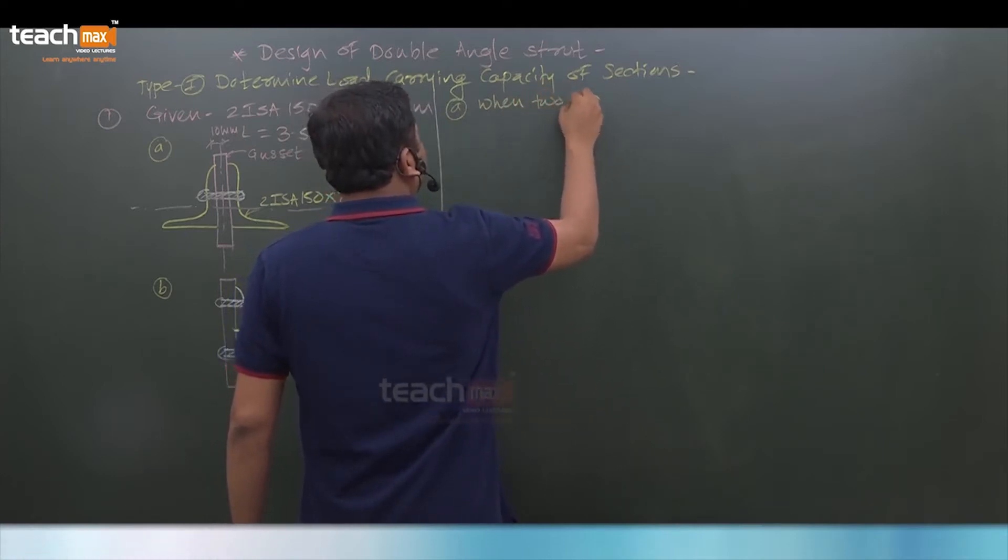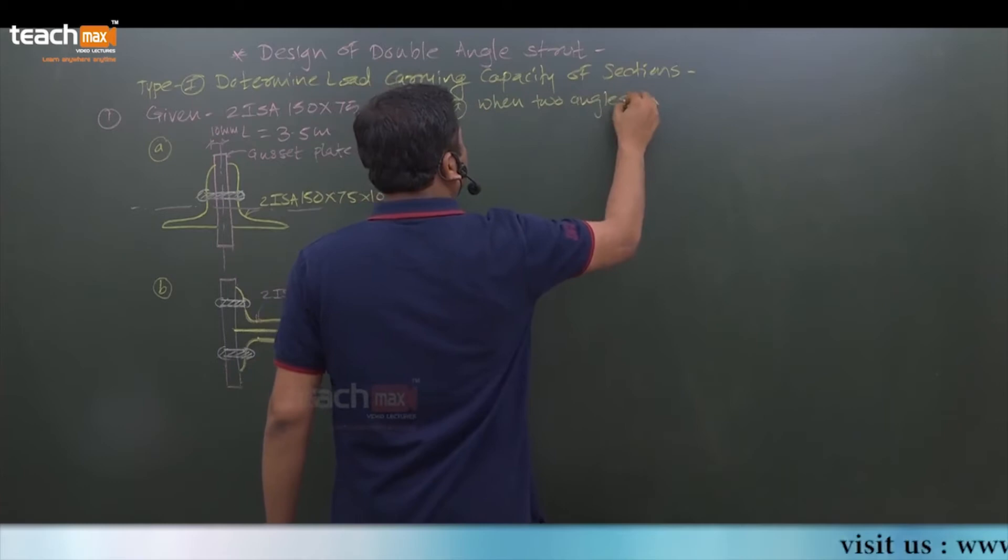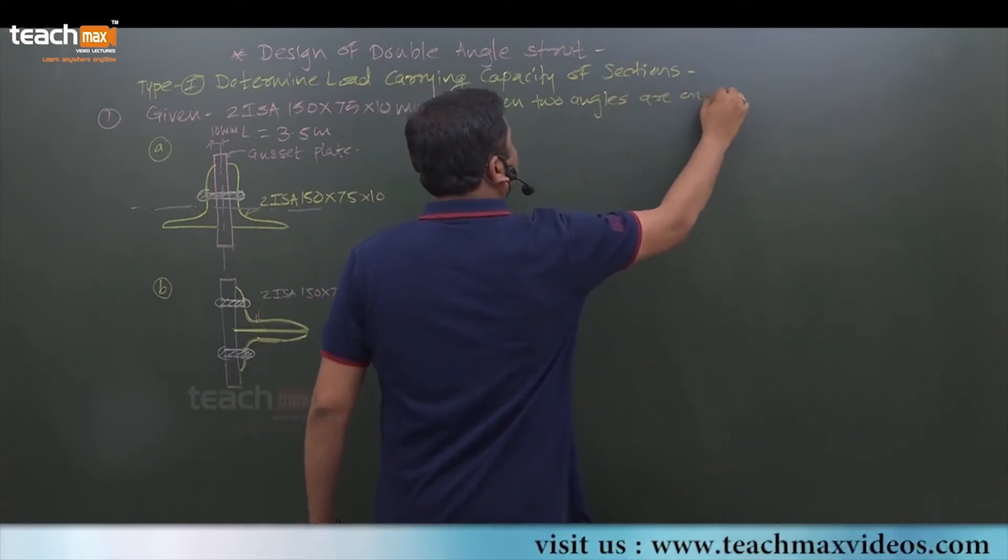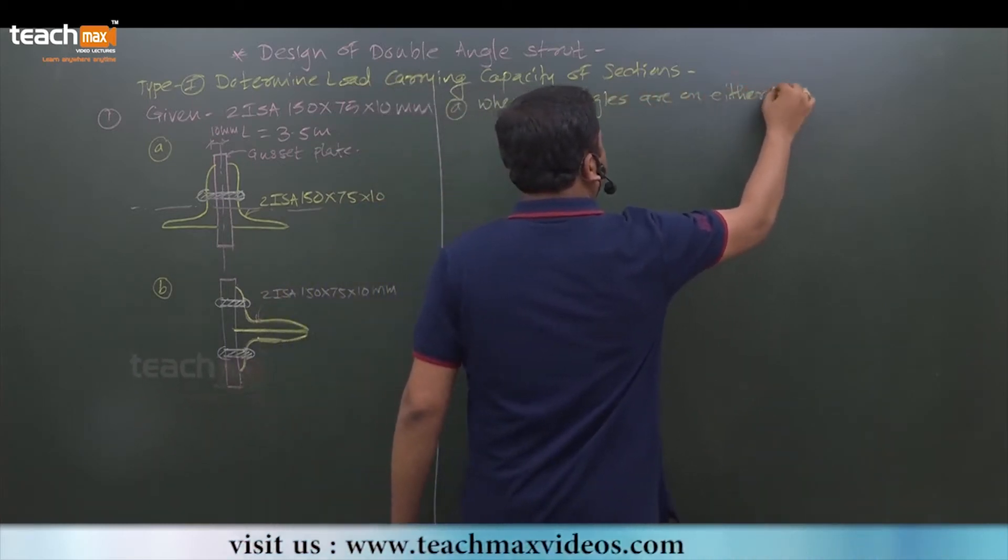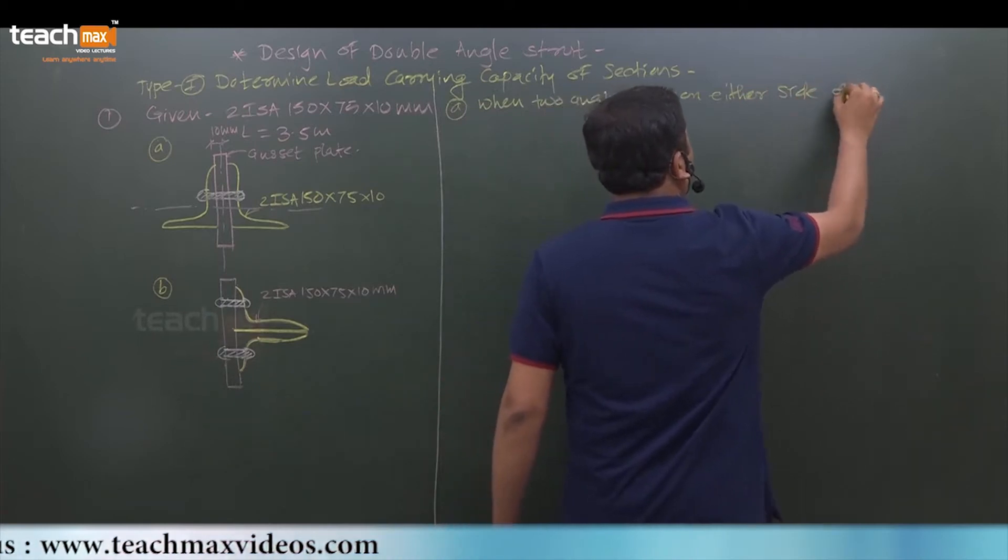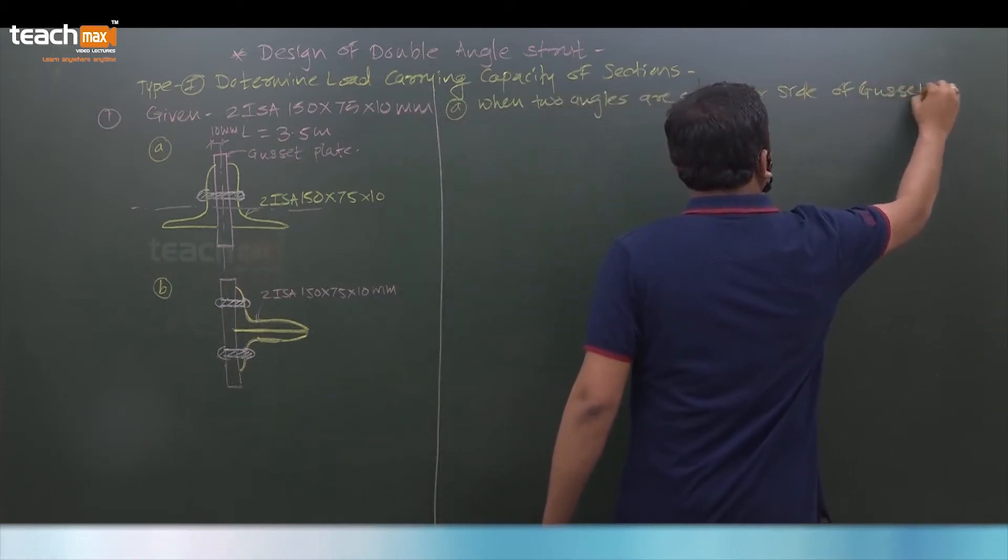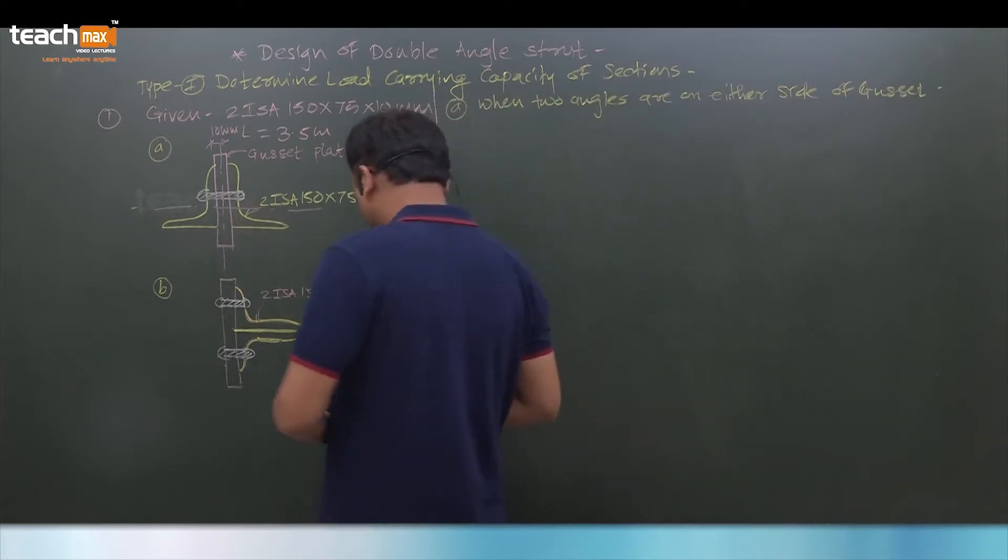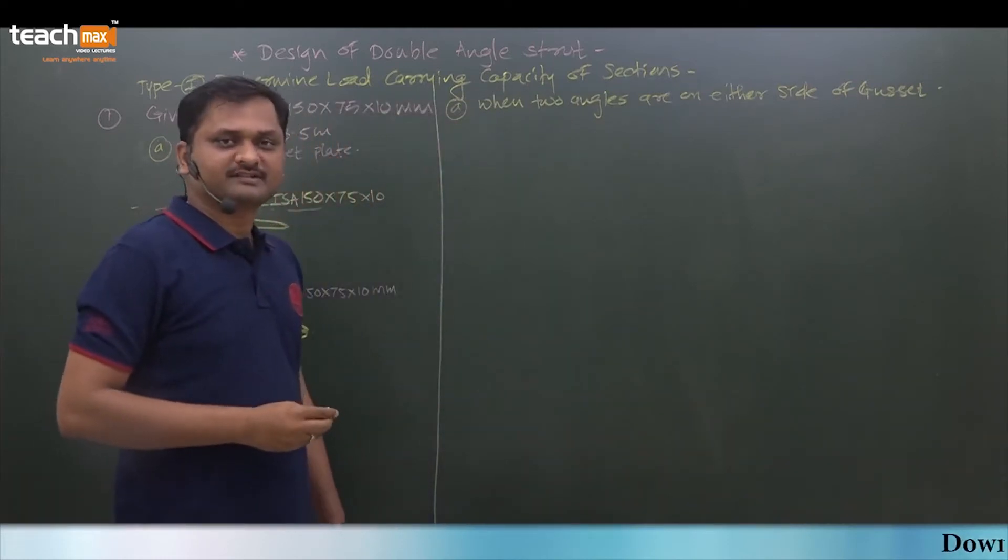We are going to solve case A when two angles are on either side of the gusset.